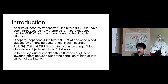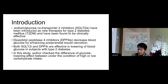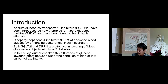First, introduction. Sodium-glucose co-transporter 2 (SGLT2) inhibitors have been introduced as new therapies for type 2 diabetes and have many effects compared to dipeptidyl peptidase-4 (DPP-4) inhibitors. DPP-4 inhibitors also decrease blood glucose. Both SGLT2 inhibitors and DPP-4 inhibitors are important drug classes. In this study, we want to check the difference between the two.